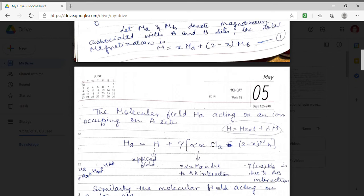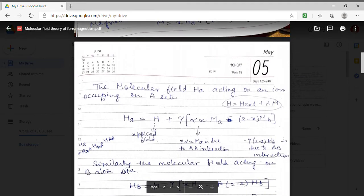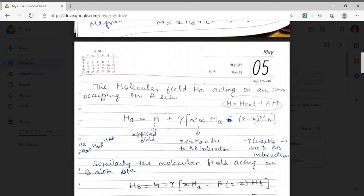The other term denotes the interaction of A with B and for A with B as we know from this if A interacts with B there the concentration is 2-X. So we have expressed minus 2-X because the interaction is with another sign so there is a negative sign and at that site that means at B site the field is MB. So the expression will be 2-X MB.